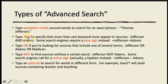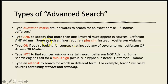The AND operator specifies that more than one keyword must appear in your sources. For example, typing 'Jefferson AND Adams' returns articles that contain both Jefferson and Adams. Some search engines prefer a plus sign instead — 'plus Jefferson plus Adams' means you want both. I use AND all the time, and you'll see examples of that in a moment.